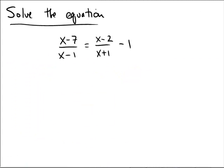Okay, let's solve this equation: x minus 7 over x minus 1 equals x minus 2 over x plus 1 minus 1.